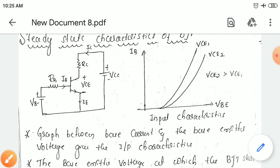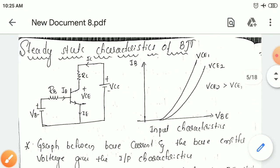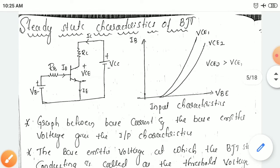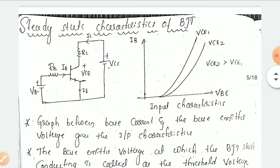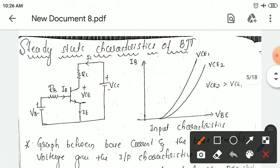This circuit indicates the equivalent circuit to draw the characteristics of a bipolar junction transistor, and this graph will indicate the input characteristics. Input characteristics of BJT is a graphical representation which will indicate the variation of the base current with respect to the variation of the base emitter voltage. That is the input characteristics of bipolar junction transistor.